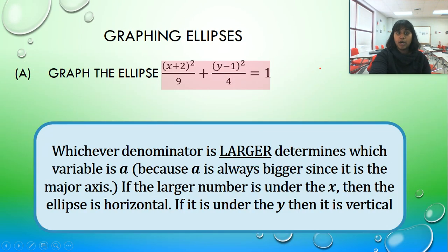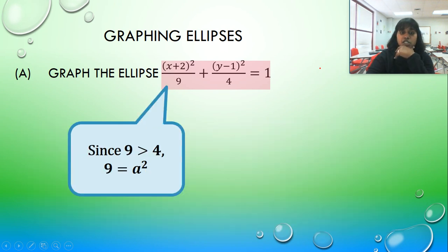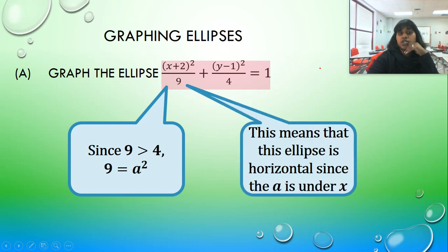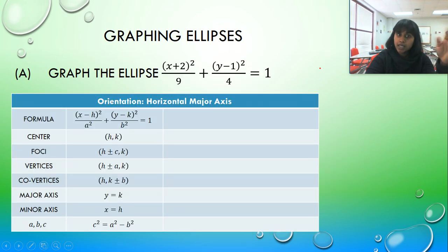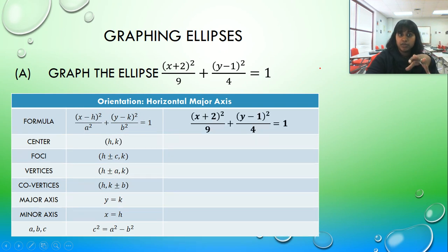Let's jump on in. Whichever denominator is larger, that's where a is, because a is the larger variable. We have 9 and 4. 9 must be a² because it's the larger one, and 4 must be b², or technically a squared or b squared. So a is actually going to be 3, and b is actually going to be 2. So now we know we are horizontal. We get to go in and grab information that we see.